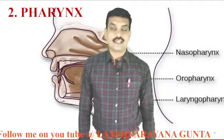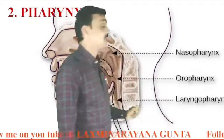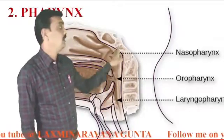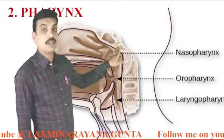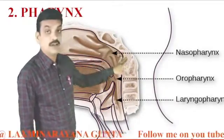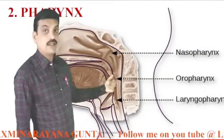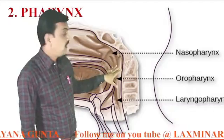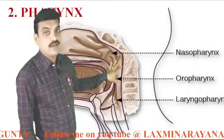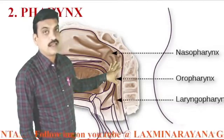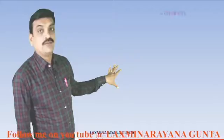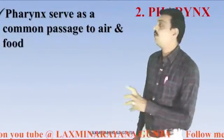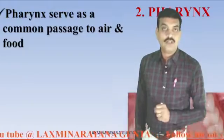The second part of the alimentary canal is the pharynx. Pharynx is a common passage both for air and food. The passage for air and the passage for food are both received into the pharynx. This pharynx serves as a common passage for both air and food.